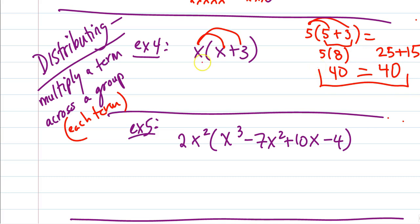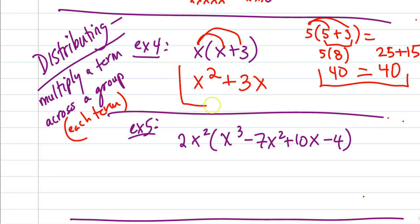So I can take this x and distribute it: x times x is x squared, plus x times 3 is 3x. Do not combine those — those are not like terms. That would be it, just distributing that x.